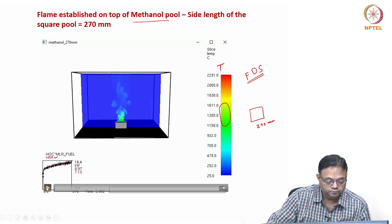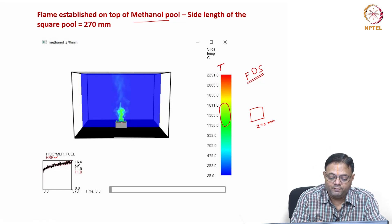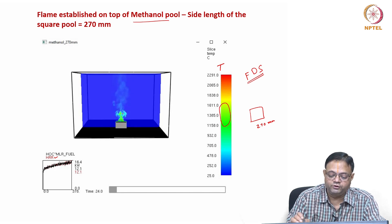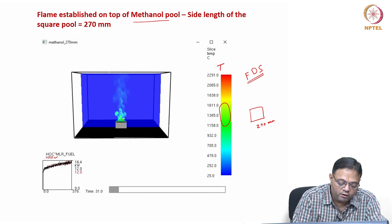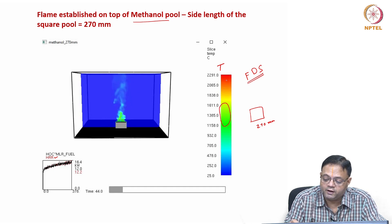You can also see the total heat release rate as the methanol pool burns, shown as a function of time. The flame forms over the entire pool and fluctuates — its height varies. If you take the height as a function of time, it shows clear oscillations. Similarly, the heat release rate also shows a good amount of oscillation over time.